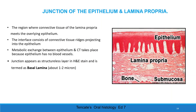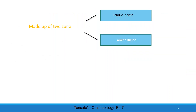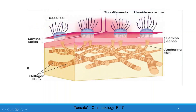Junction of the epithelium and lamina propria. The region where the connective tissue of the lamina propria meets the overlying epithelium consists of rete ridges projected into the epithelium. Metabolic exchange between connective tissue and epithelium occurs here, as epithelium has no blood vessels. This junction appears as a structureless layer on hematoxylin and eosin stain. It is made up of two zones: lamina lucida and lamina densa. Lamina densa is a homogenous finely fibrillar assembly of extracellular matrix separated from adjacent cells by lamina lucida. Lamina lucida contains the protein that attaches cells to the basal lamina, including collagen 17 and integrin.